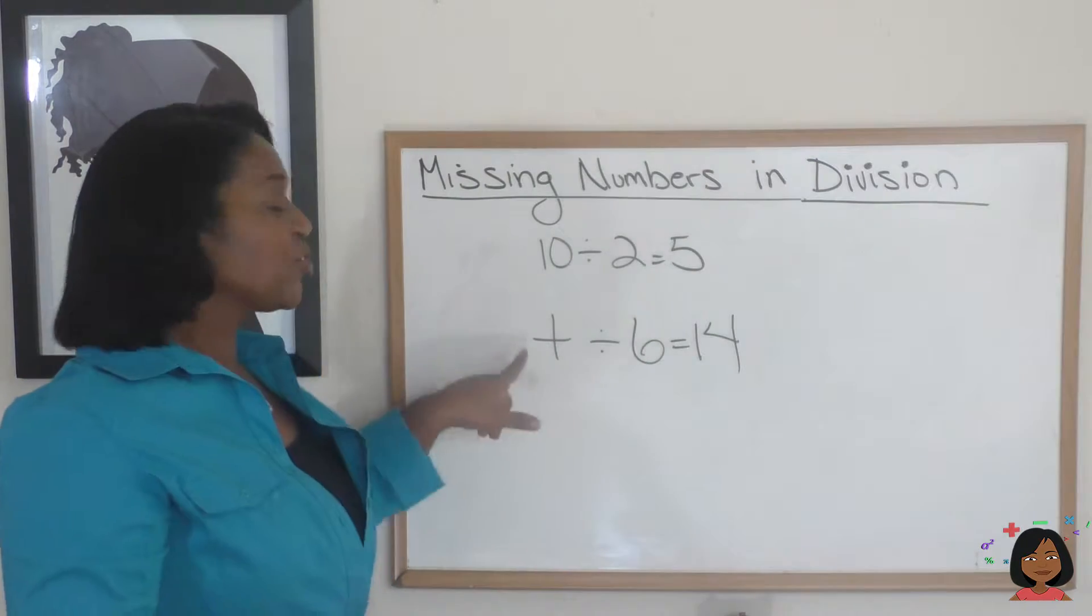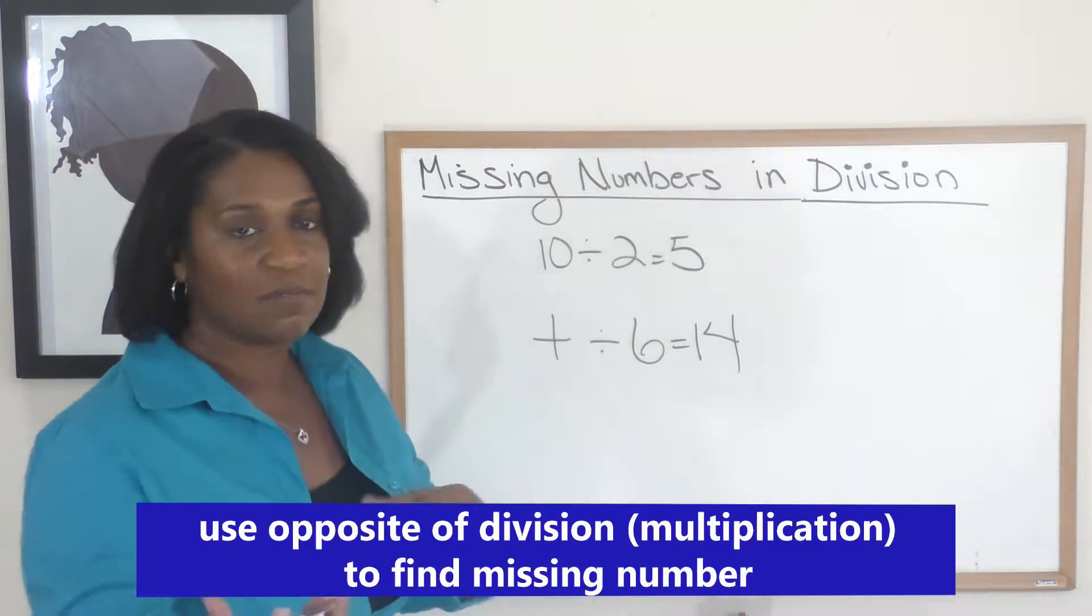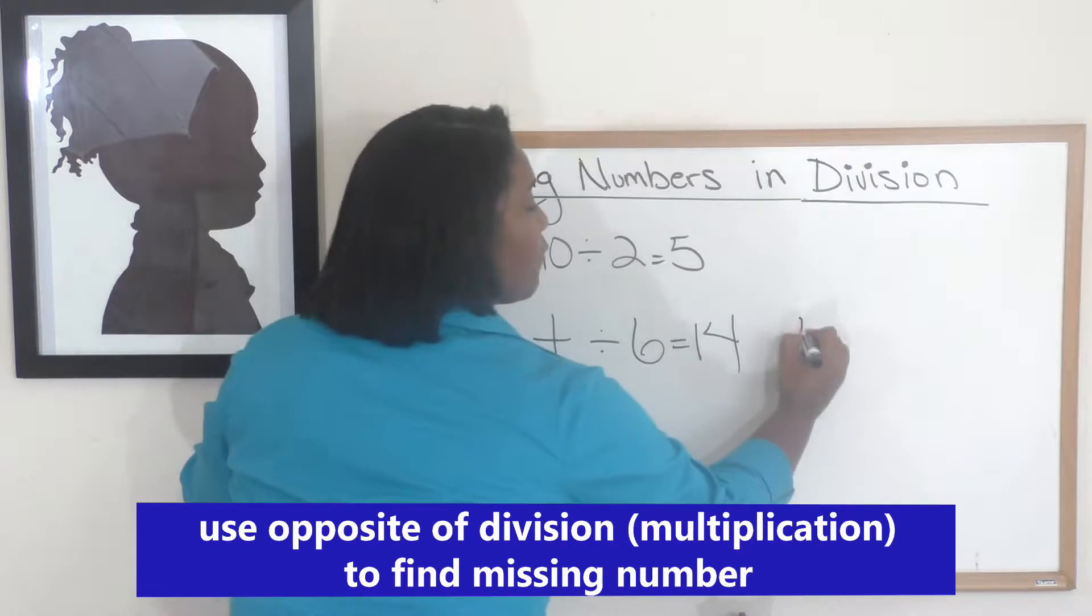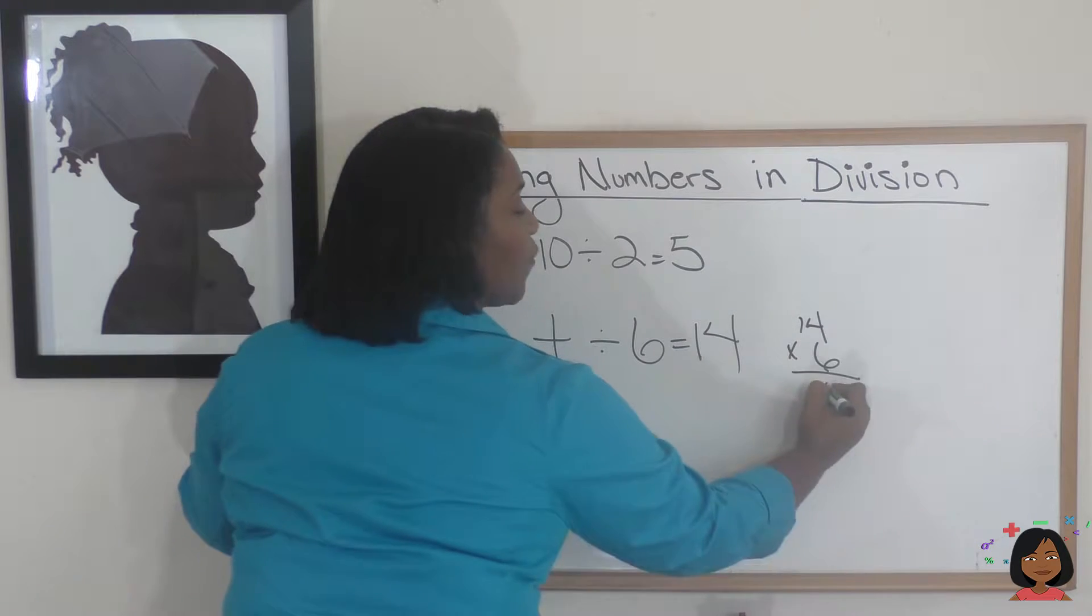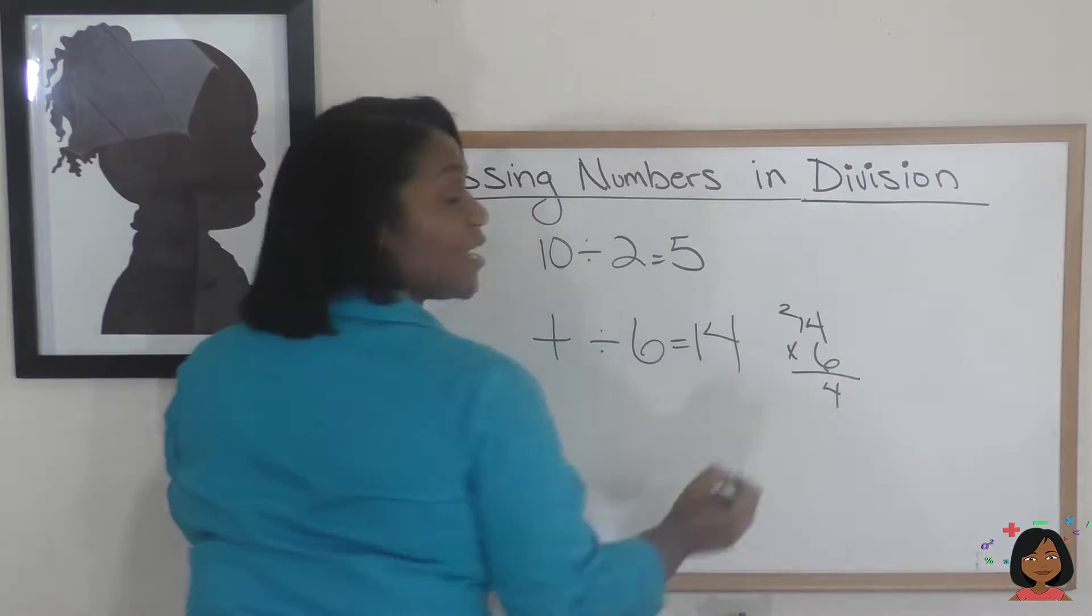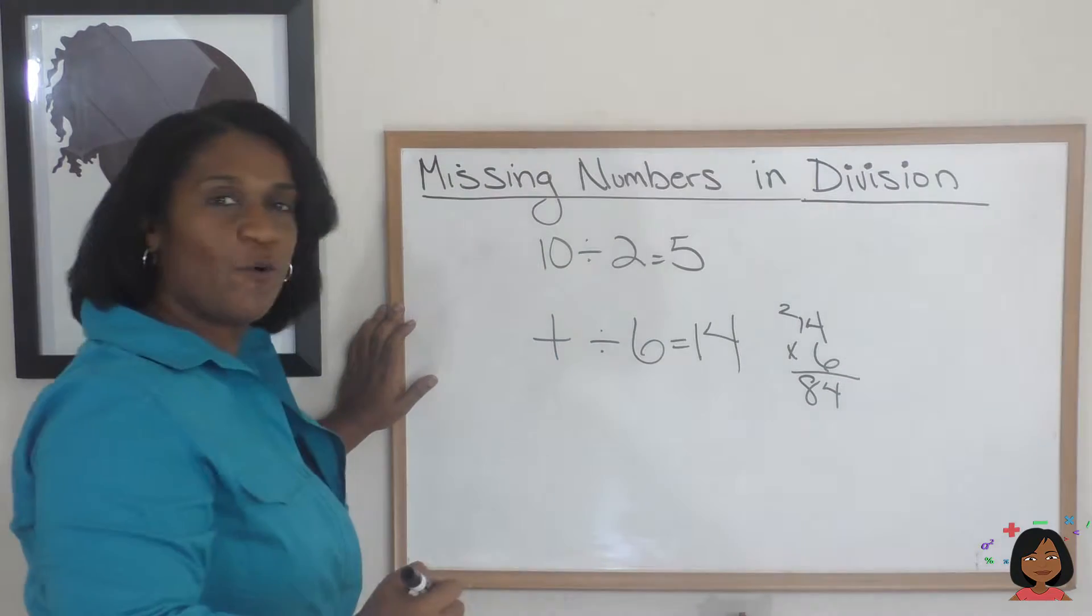Same kind of problem. We're trying to find our dividend, so we can use multiplication. Let's do it: 14 times 6. 6 times 4 is 24, 6 times 1 is 6, plus 2 is 8, so we have 84.